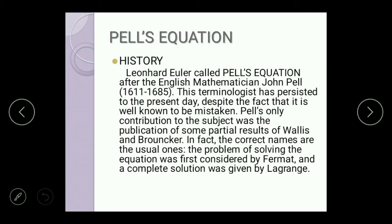Leonard Euler called Pell's Equation after the English mathematician John Pell, 1611 to 1685. These terminologies has persisted to the present day, despite the fact that it is well known to be mistaken. Pell's only contribution to the subject was the publication of some partial results of Wallis and Brouncker. In fact, the correct names are the usual ones. The problem of solving the equation was first considered by Fermat, and a complete solution was given by Lagrange.